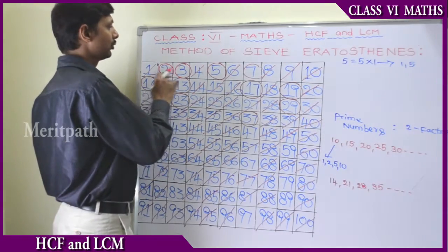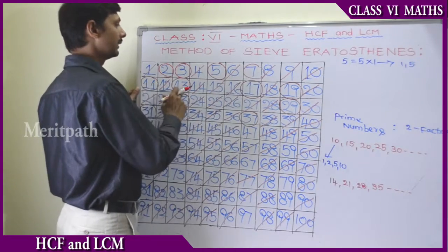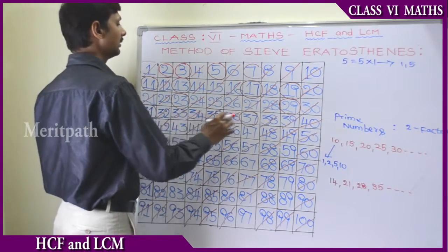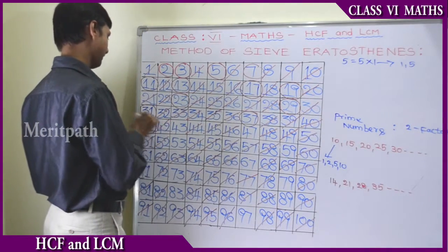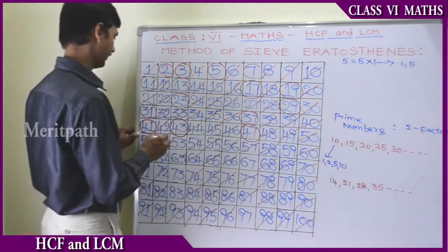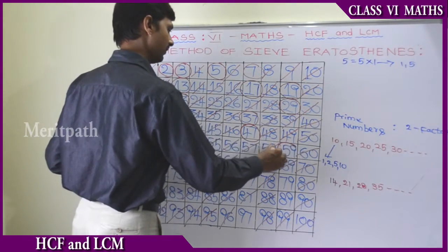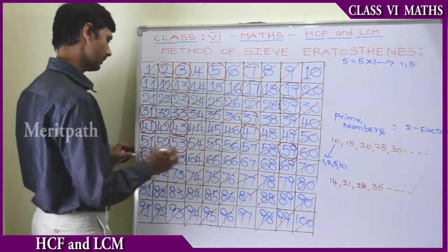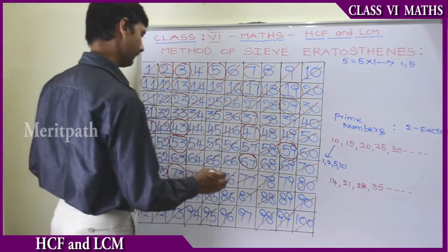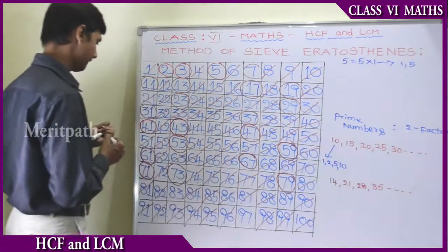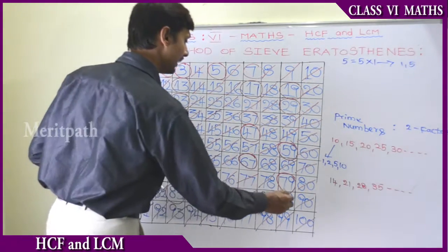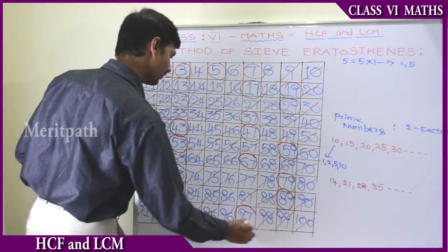So here we have taken the prime numbers: 2, 3, 5, 7, 11, 13, 17, 19, 23, 29, 31, 37, 41, 43, 47, 53, 59, 61, 67, 71, 73, 79, 83, 89, 97. These are the prime numbers.